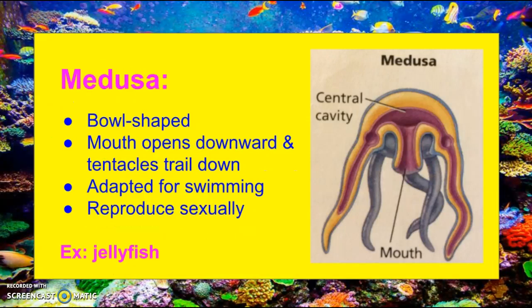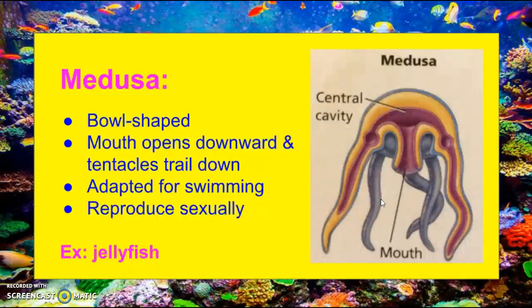Your second body plan is the medusa. These are bowl-shaped — it's rounded, looks like an upside-down bowl. The mouth opens downward and the tentacles trail down. These are more adapted for swimming. Medusas normally reproduce sexually, and an example would be a jellyfish.